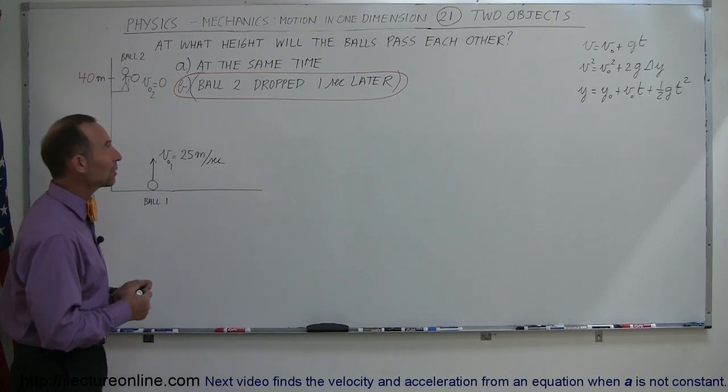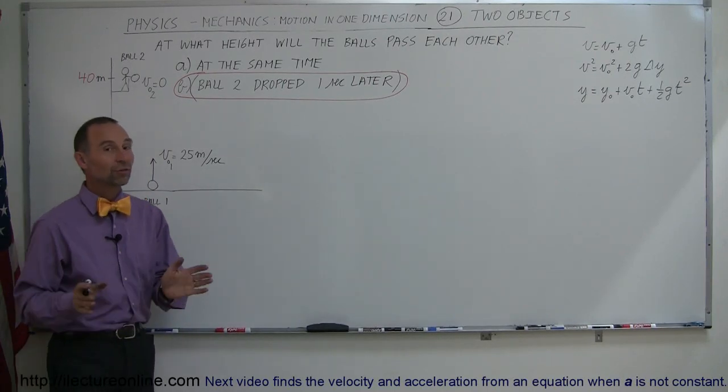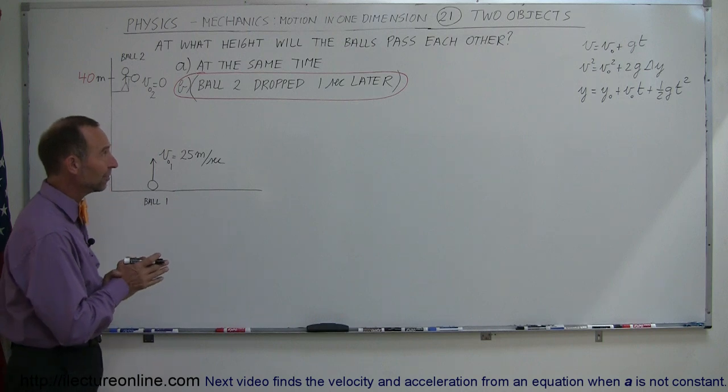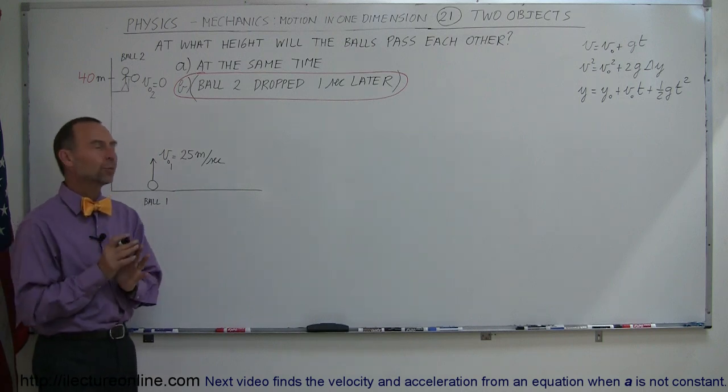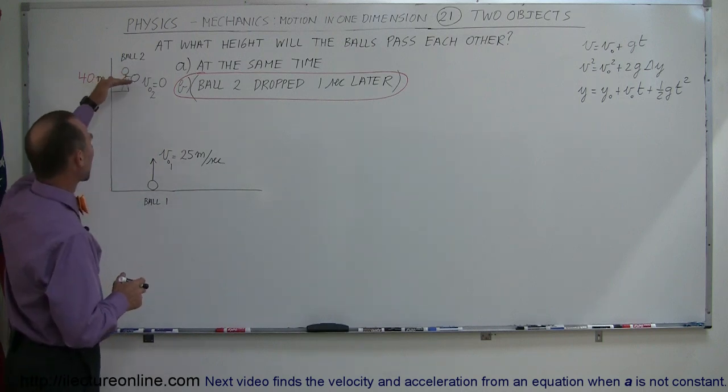Here's our next example of how we deal with motion in one dimension, especially free fall, with two objects in place. On our previous example, we showed you how we had one ball being dropped, the other ball being thrown up.